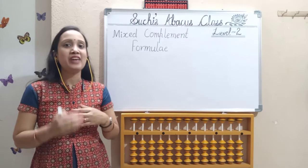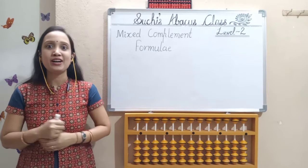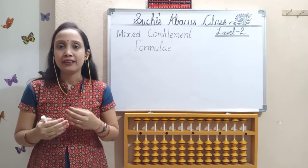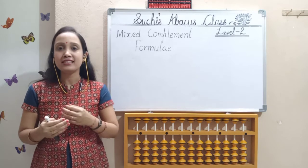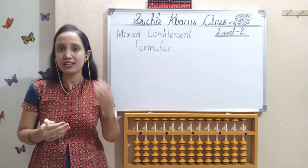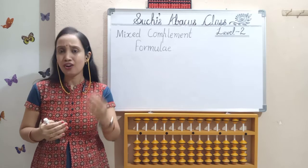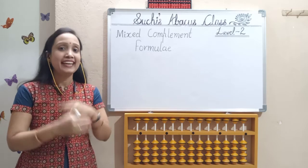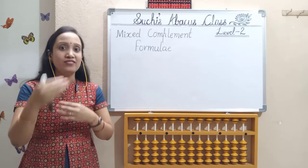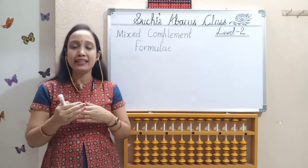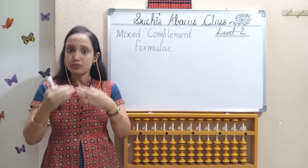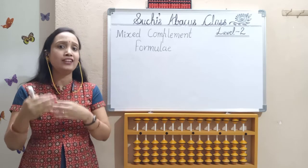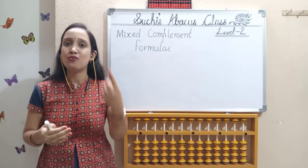in my previous videos, we have completed level 1 and some portion of level 2 also. In level 2, we have already learned the formulas of small friend, that is 5 complement formula — 4, 3, 2, and 1. In that time, I told you that if 10's complement big friend formula is not there, we should apply their small friend formula.